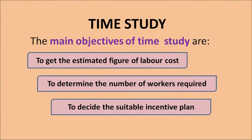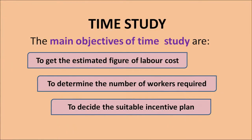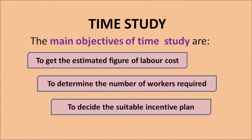The main objectives of time study are: to get the estimated figure of labor cost — if you know the standard time of producing a particular product, you can calculate the total labor cost; second, to determine the number of workers required; and third, to decide a suitable incentive plan for the purpose of wage remuneration.